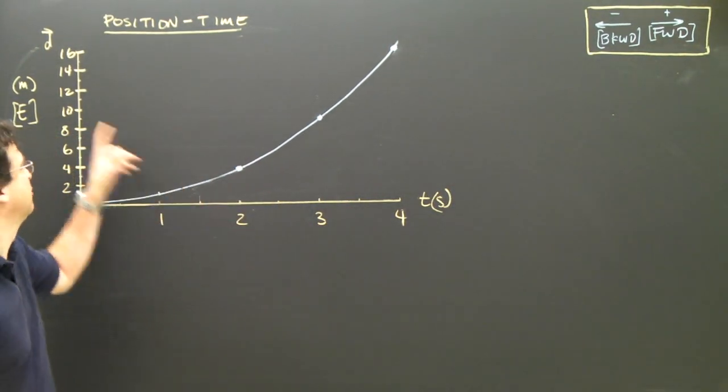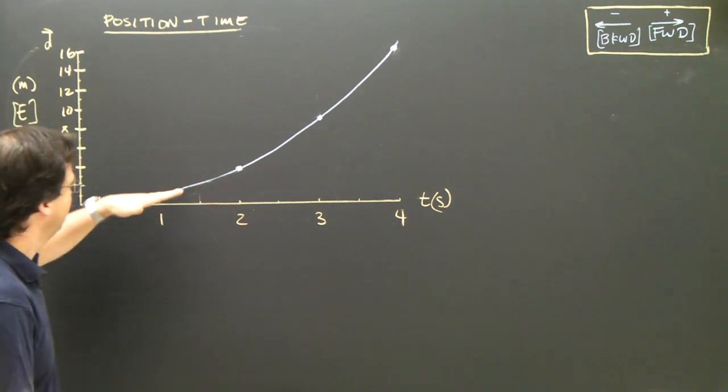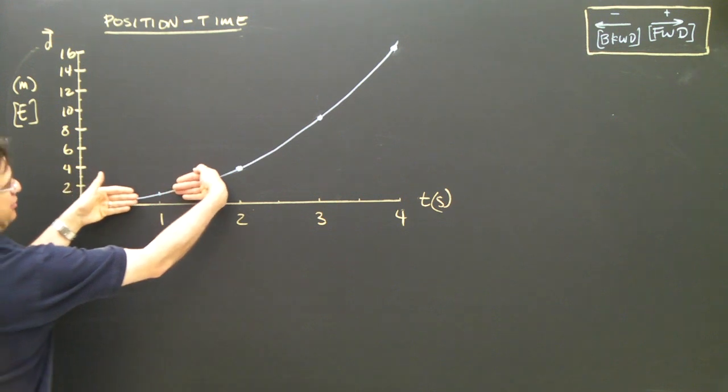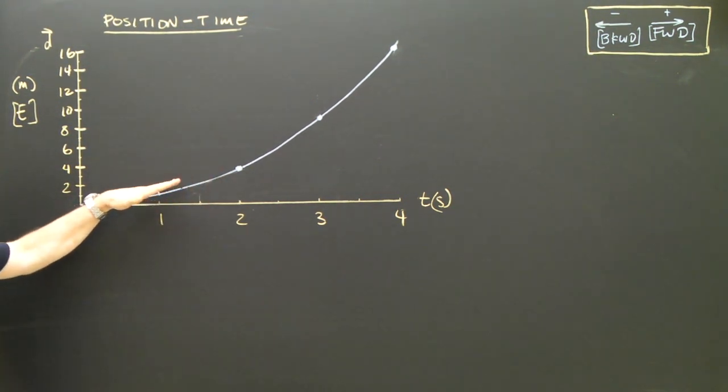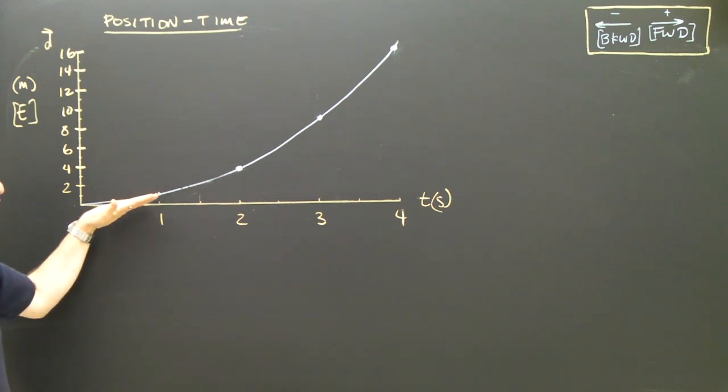Remember, the slope of a position-time graph is velocity, how fast you're going. So I take a look at this graph, and let's just take a look at one second. At one second, it looks a little bit like a straight line, a very shallow slope. So the velocity must be very small, it's moving slowly.